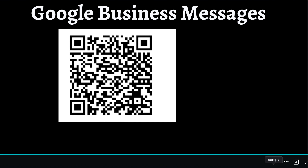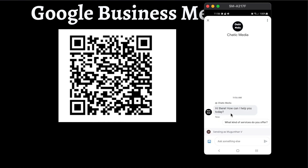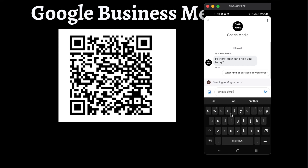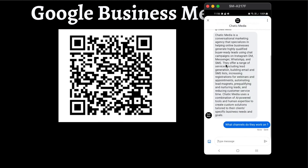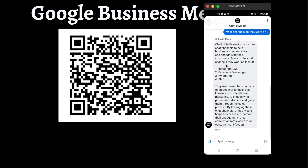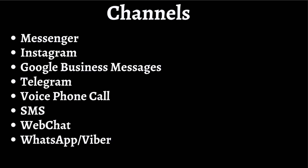Now let's see how this works in Google Business Messages. I need to scan this QR code — let me do that. I've scanned it and it has opened the Google app, saying 'Hi there, how can I help you today?' I ask 'What is Chatic Media?' and it responds that it's a conversational marketing agency. I also ask 'What channels do they work on?' and it responds: Instagram DM, Facebook Messenger, WhatsApp, and SMS. That's how this works on Google Business Messages. You can reduce costs and save a lot of time with this. If you have any questions, let me know in the comments.